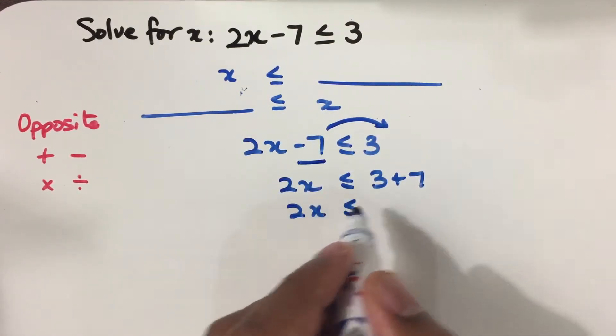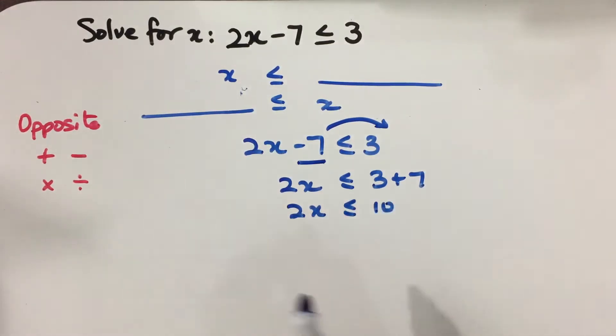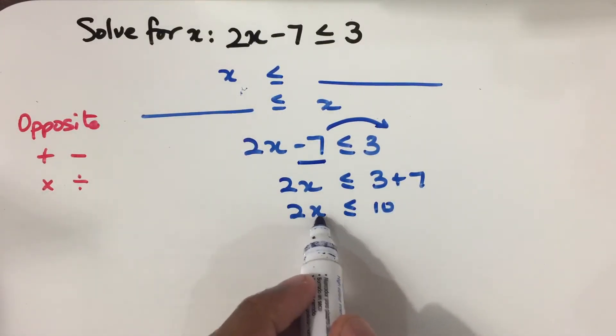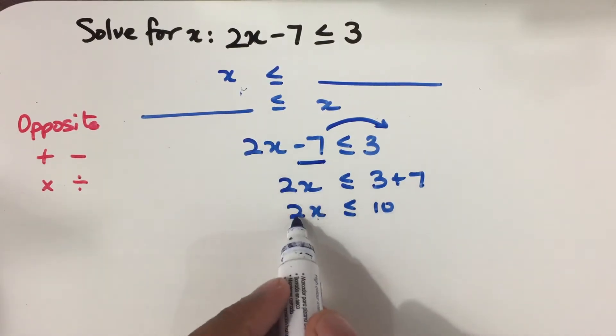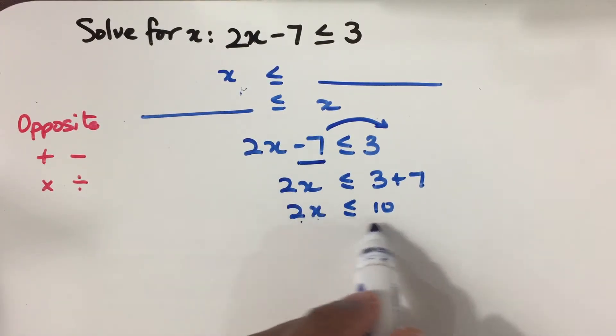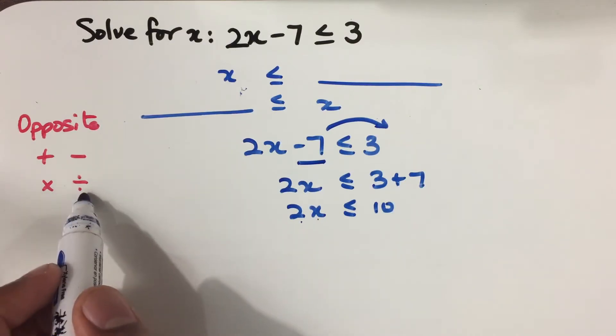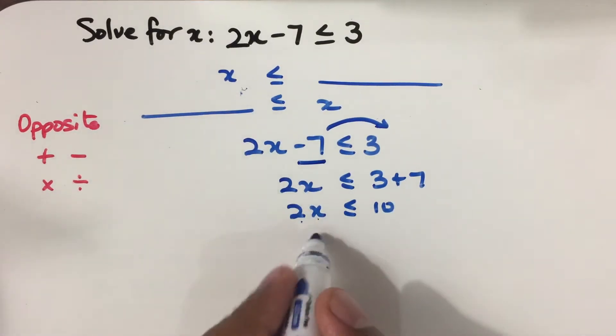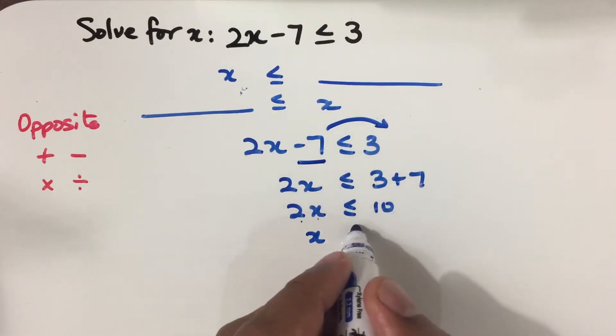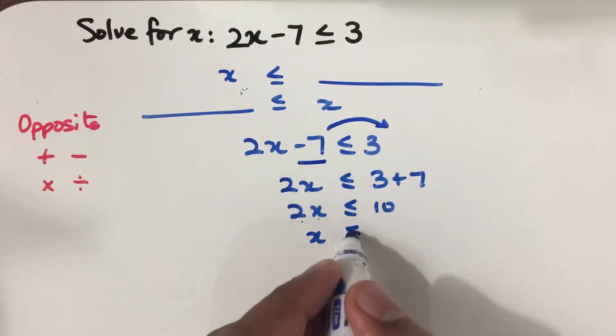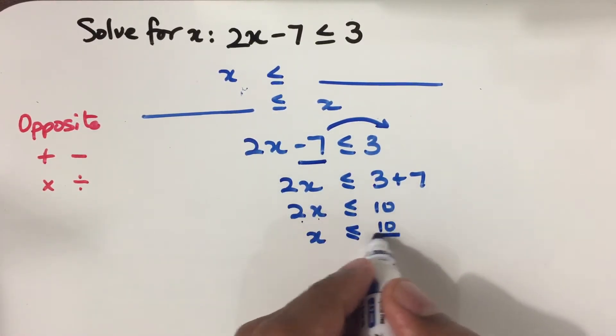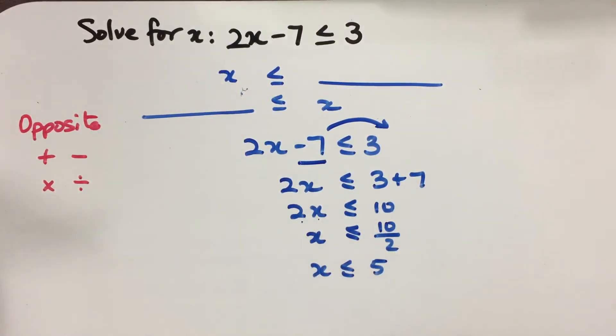So now we have 2x is less than or equal to 10. This 2 is timesing x. So if we want to bring the 2 across the other side of the inequality, we need to do the opposite. What is the opposite of multiplying? That's dividing. So we have 2 divided by 2. So then x now is less than or equal to 10 divided by 2, and 10 divided by 2 is 5.